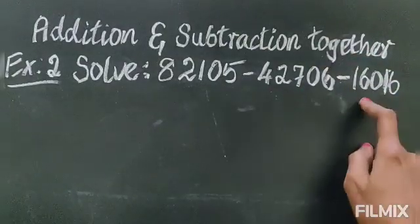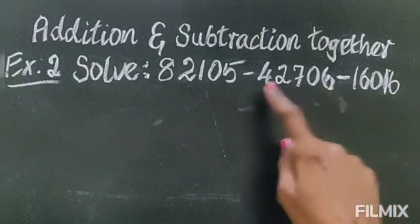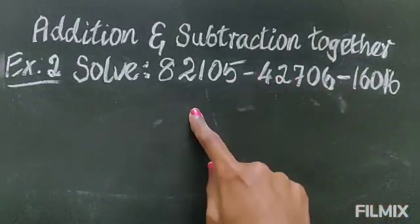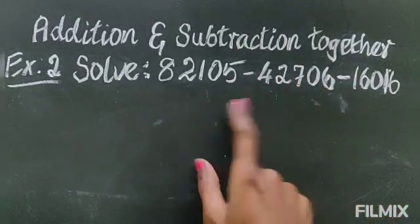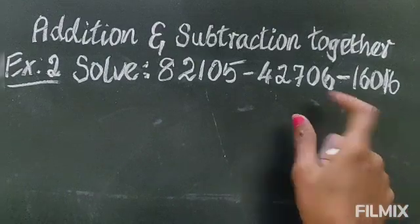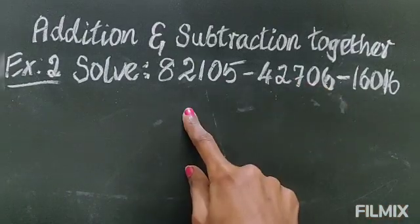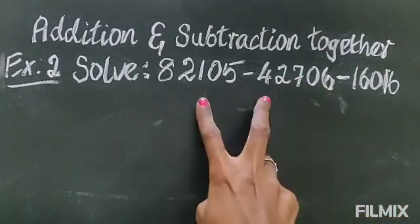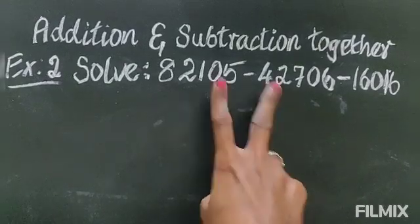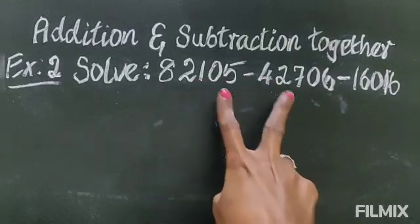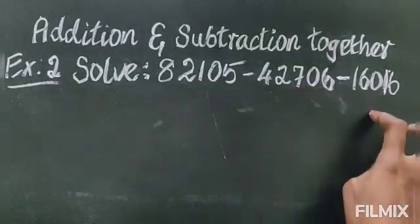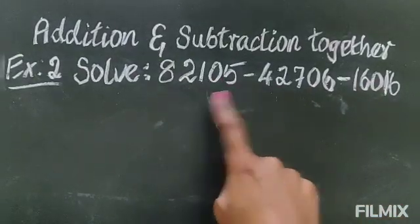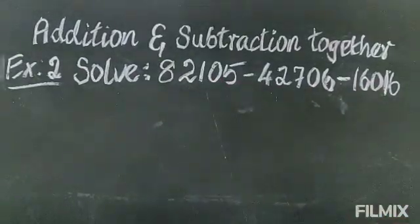Otherwise, the last two numbers which are having minus, you will add those two numbers and you can minus that addition from the first number. That way also you can do. But since it is given in minus, let's do this method — first we will minus here, again we will minus this one. So first let's minus these two numbers and arrange them in order.